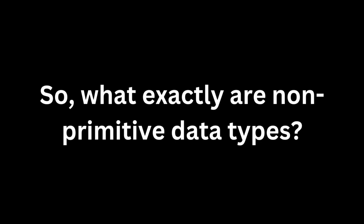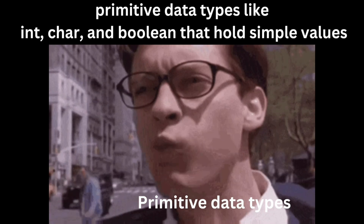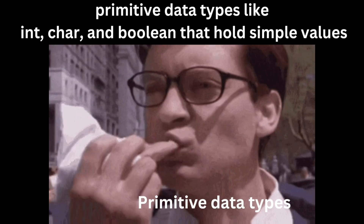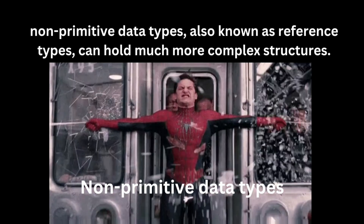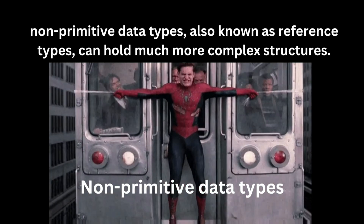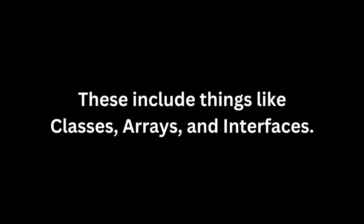So, what exactly are non-primitive data types? Well, unlike primitive data types like int, char, and boolean that hold simple values, non-primitive data types — also known as reference types — can hold much more complex structures. These include things like classes, arrays, and interfaces.